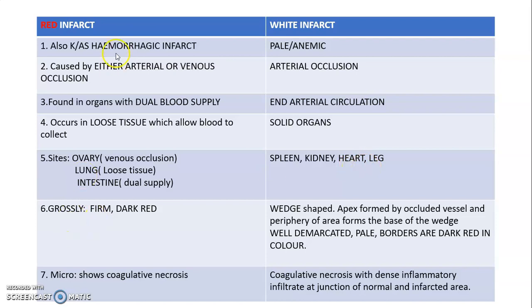Grossly, red infarcts are firm and dark red. White infarcts are wedge-shaped, with the apex formed by the occluded vessel and the periphery of the area forming the base of the wedge. White infarct is usually well demarcated, pale, with dark red borders.